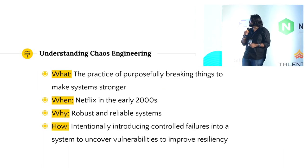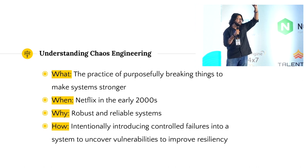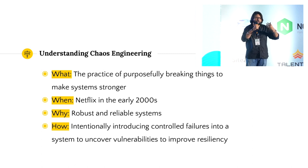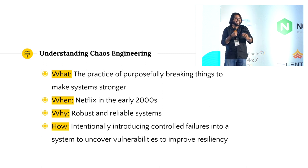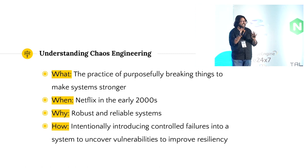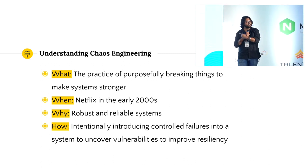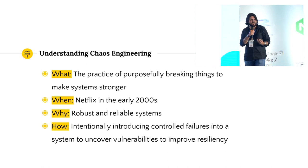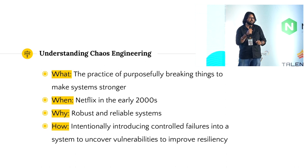Chaos engineering is like a roller coaster ride for your application and infrastructure. You know your application and infrastructure are steady, but you purposely add faults at different places at the same time and see how your system responds. It's the practice of purposefully breaking things to make systems stronger.